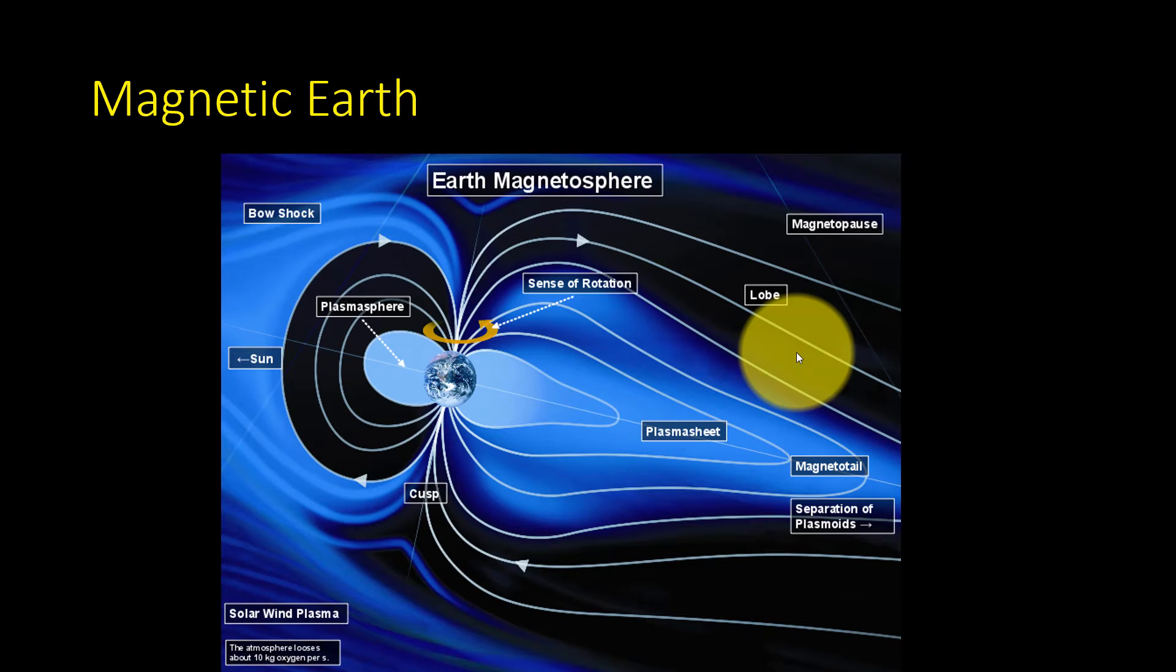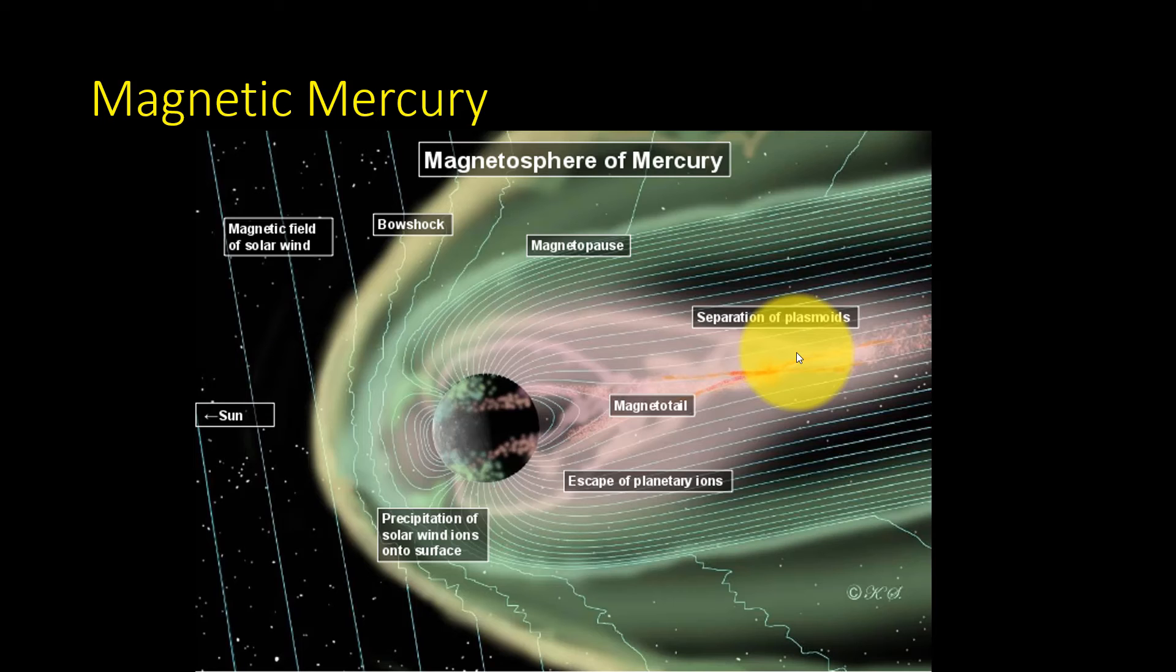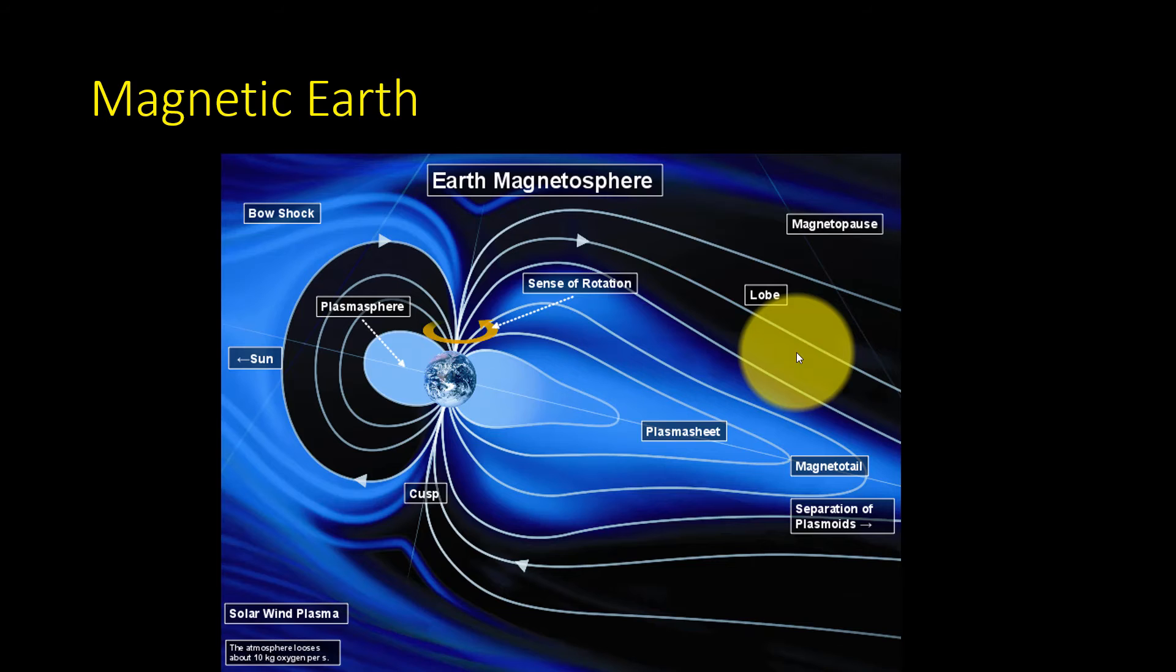Skipping outward, I want to look at Earth again, because notice that the structure of the magnetic field is very similar to what we just saw in Mercury a moment ago. The magnetic field is compressed on the Sunward side and stretched on the side that's going away from the Sun.